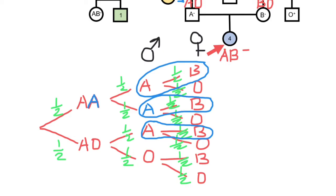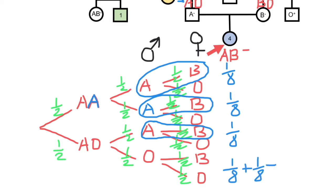Three variants out of eight produce AB blood group. The probability of the first variant is one half times one half times one half — one eighth. The probability of the second variant is also one eighth. The probability of the third variant is also one eighth. So we have one, two, three, four, five, six, seven, eight total outcomes. Adding the three probabilities: one eighth plus one eighth plus one eighth equals three eighths. This is the probability for the child to belong to blood group AB.